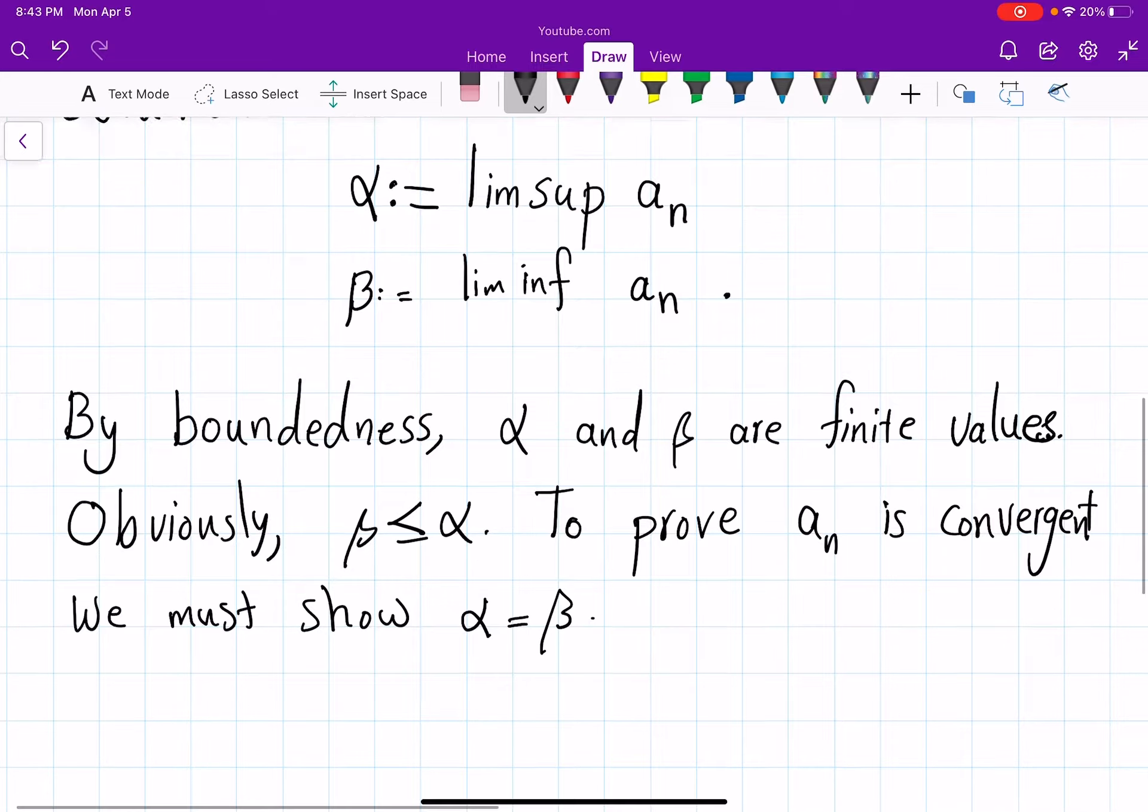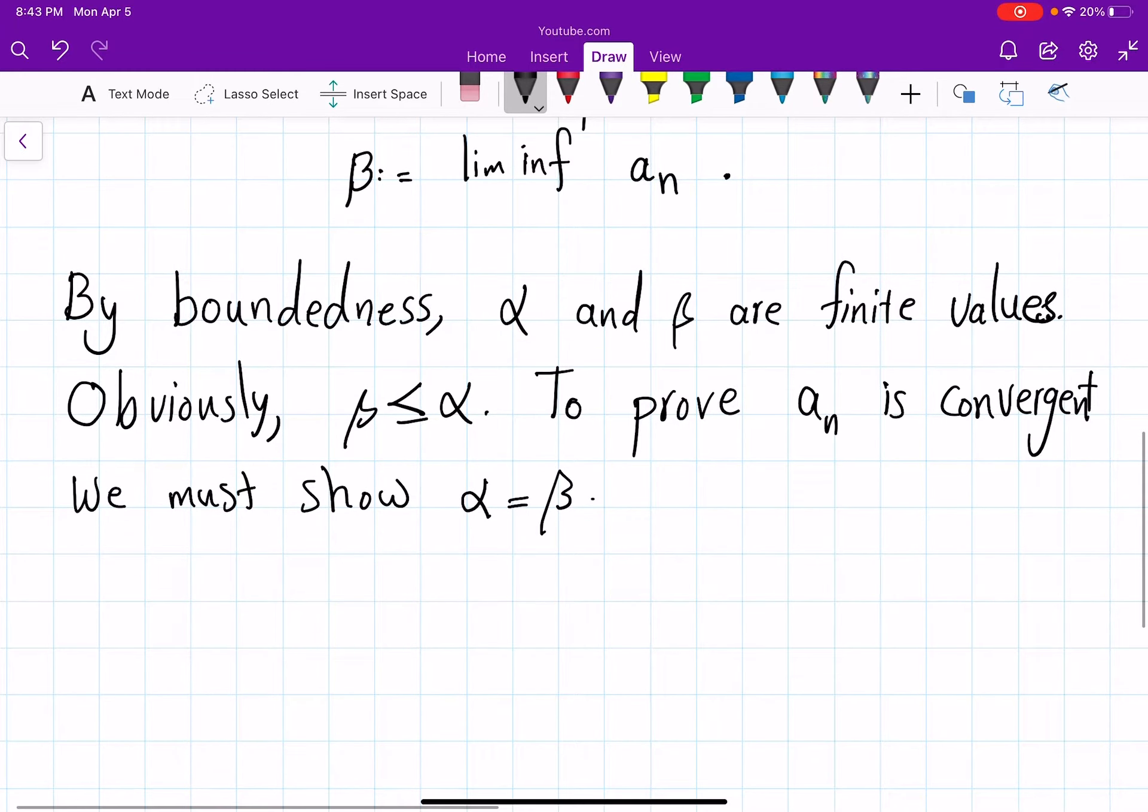So no doubt about that. So how am I going to prove this? So suppose to the contrary that d equals α minus β is not zero which makes it strictly positive and we're going to reach a contradiction.